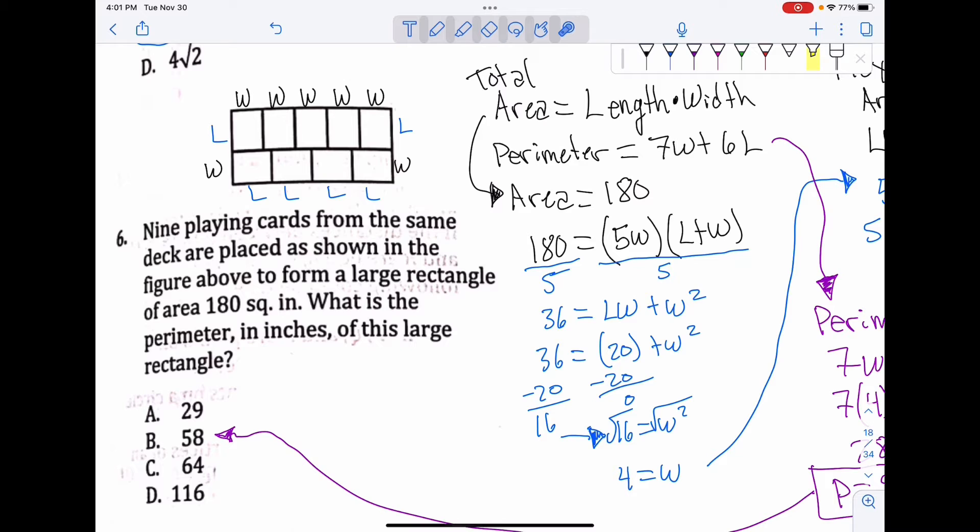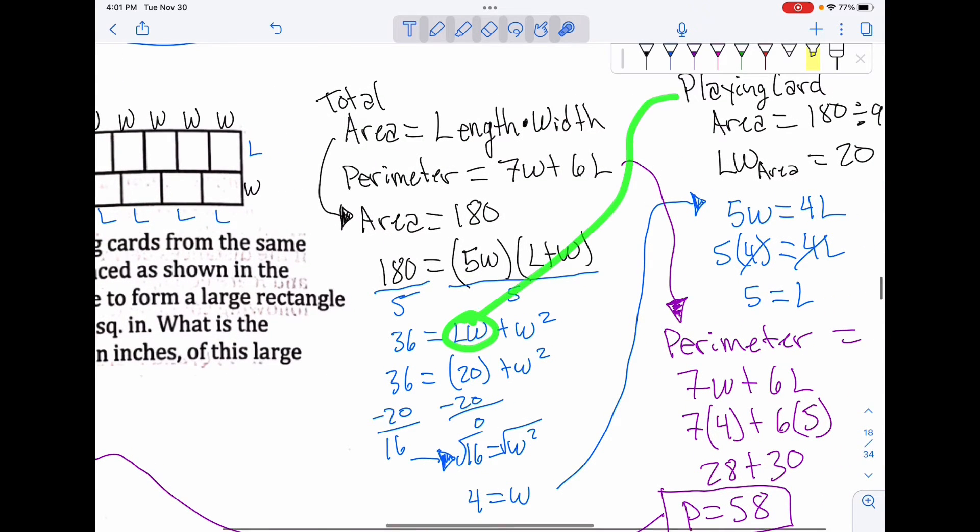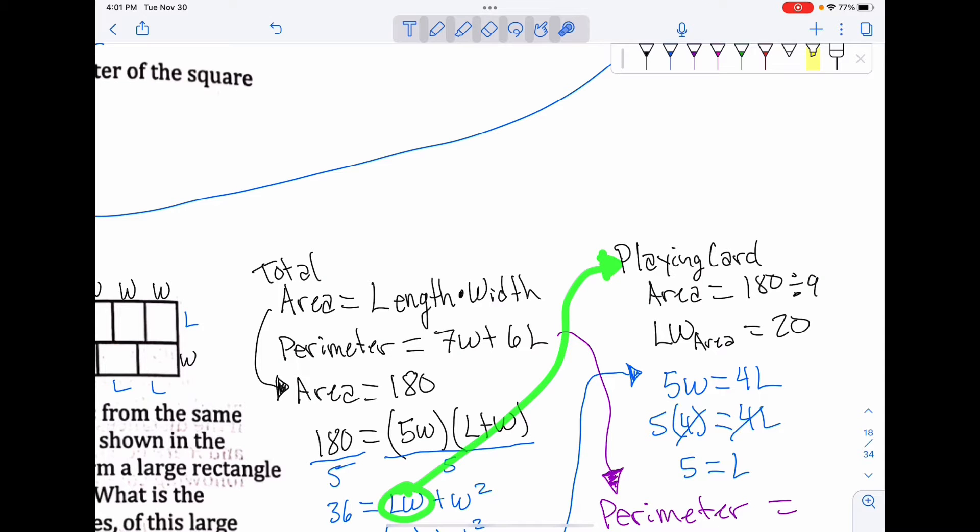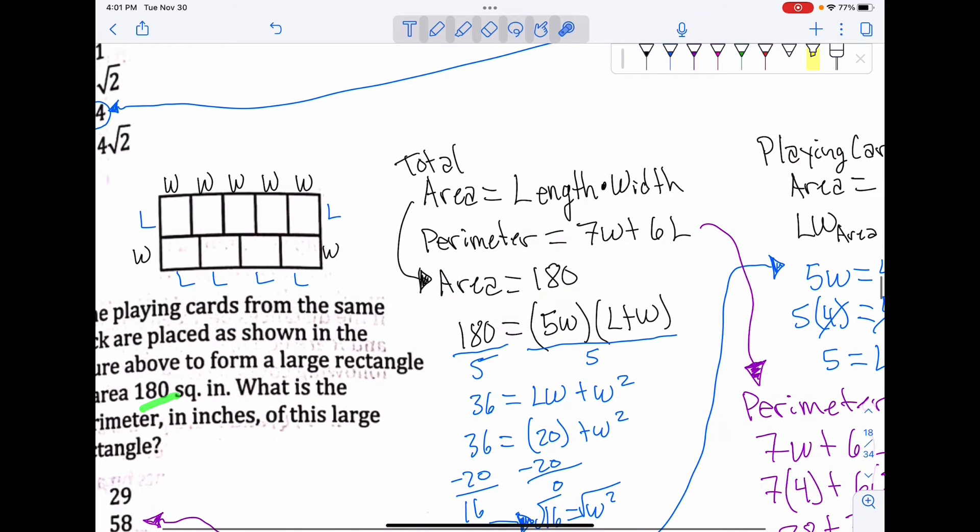We have 7 w's and 6 l's, and the area is given as 180 square inches. So 180 equals 5w times width, which is just this plus this. Since it's being multiplied, I can divide the 5 out. 180 divided by 5 is 36, and you're left with w times w, which is w squared. My regular playing card has an area of 20, because 180 divided by 9 gives us 20.